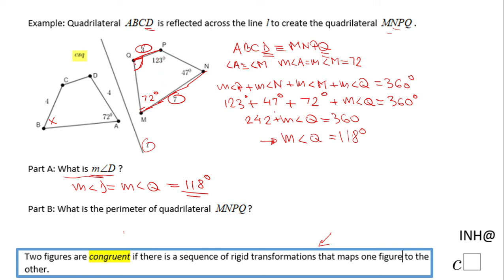MQ and AD are corresponding, so MQ is 4. Also, BC and PN are corresponding, so they are both 4 as well.